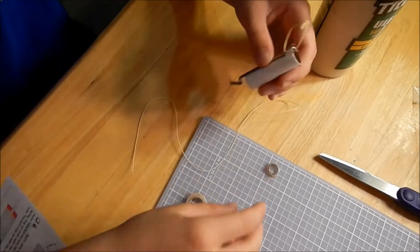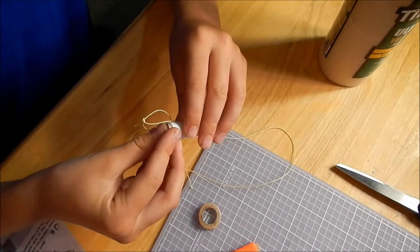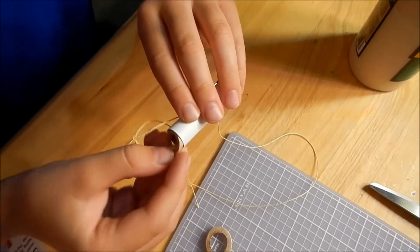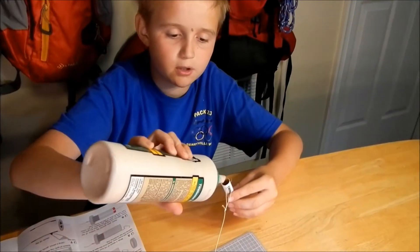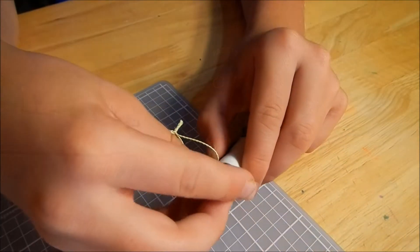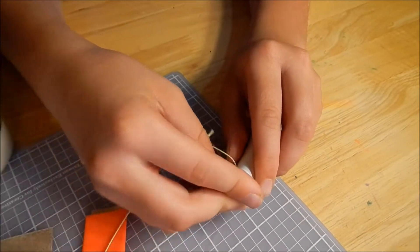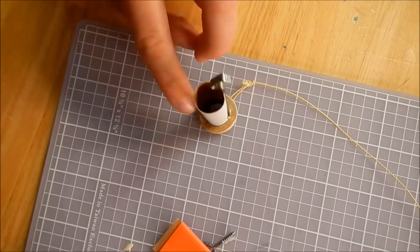Then you want to grab this end piece and you want to put it in right here, and then you want to glue it down. You just want to pour it a little bit around. Now what we're going to do is just put glue around this part.